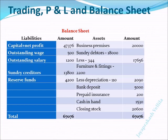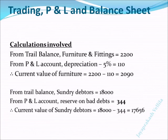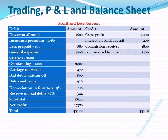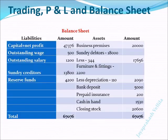The value of furniture and fittings is 2,200 as per the trial balance. But there is a depreciation of 2% as per the adjustment, and that value is 110, which we already found in the profit and loss account. That 110 is to be reduced from 2,200 — so 2,200 minus 110 equals 2,090.